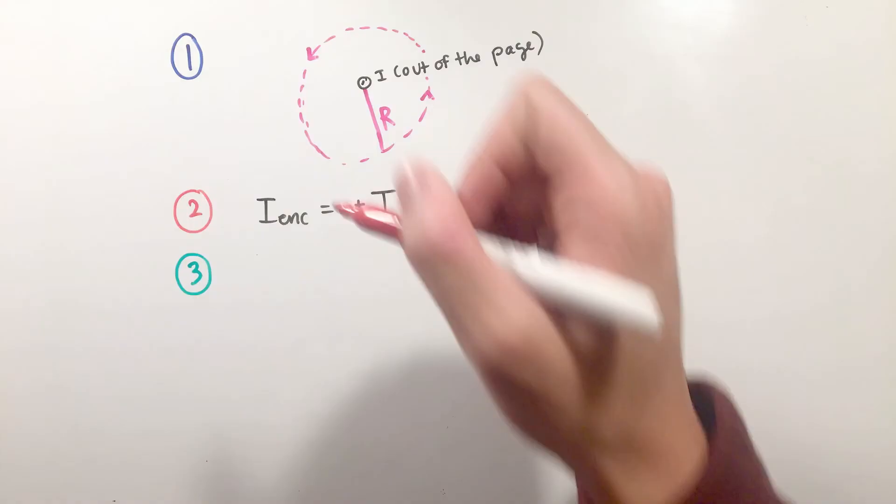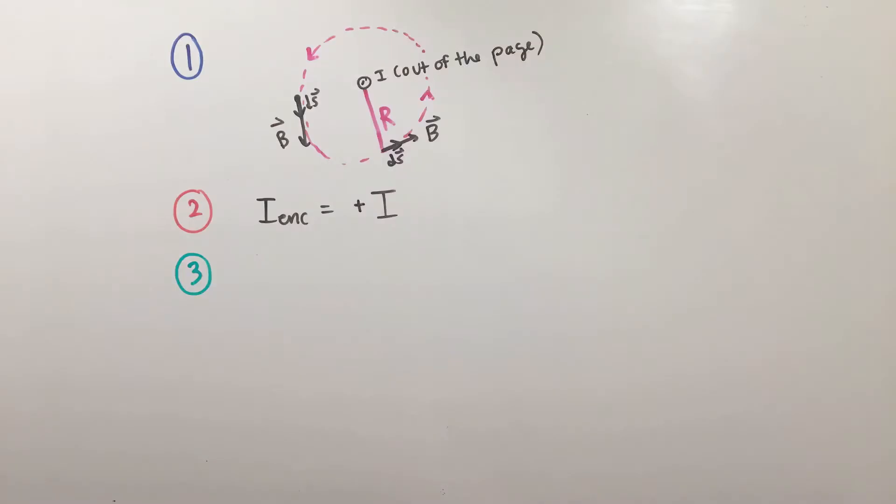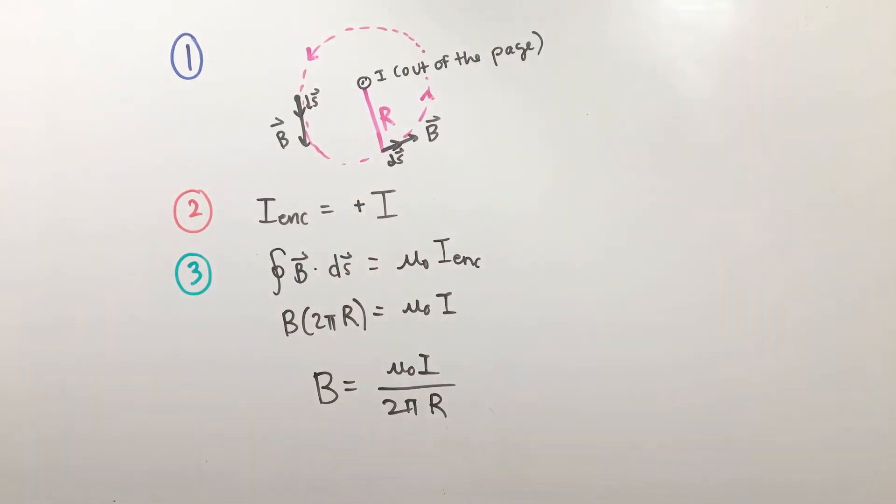As for step three, let's put all these pieces into our equation. Realizing that, due to the cylindrical symmetry, the magnetic field will be circular around our current-carrying wire, we can simplify the loop integral to simply B times 2πR, as the B and ds vectors will always align parallel. Solving for B, we can arrive at an equation for the magnetic field outside of an infinite current-carrying wire.